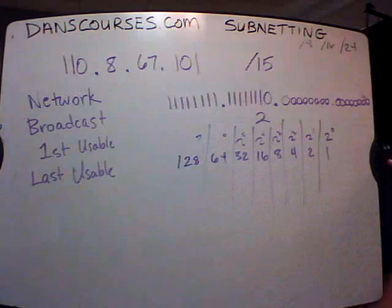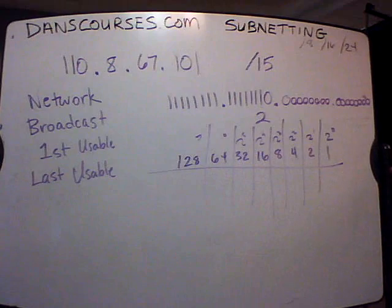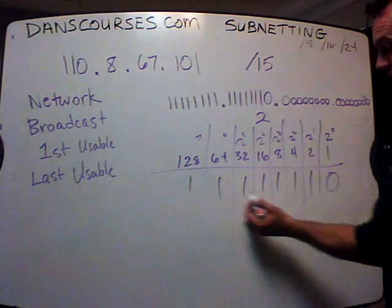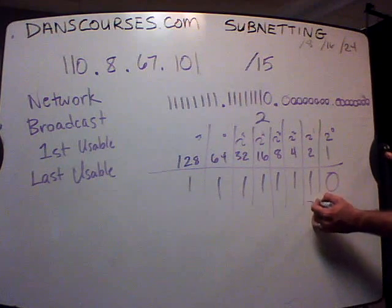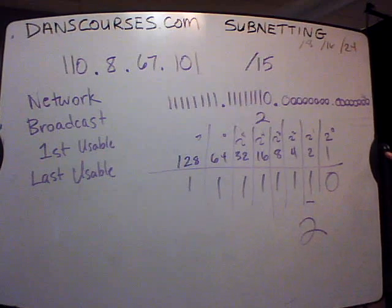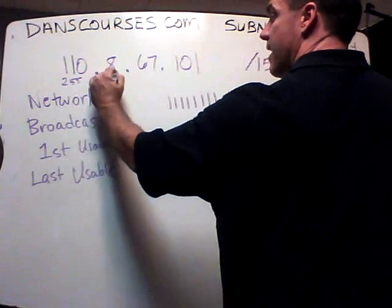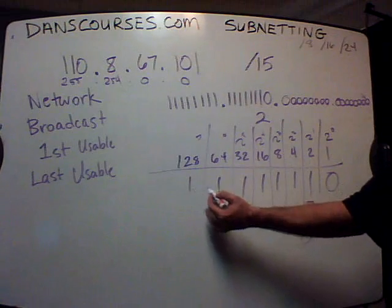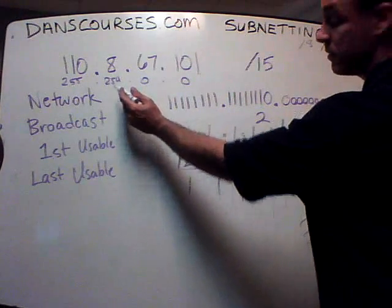Just like in decimal — but decimal is based on 10, with ones, tens, hundreds, thousands — in binary it's ones, twos, fours, eights; every time it doubles. So if you add all of those up, you can figure out the subnet mask. The magic number is the last place value, which is 2. And if you write out the subnet mask in decimal, it would be 255.254.0.0 — because 128+64+32+16+8+4+2 equals 254.